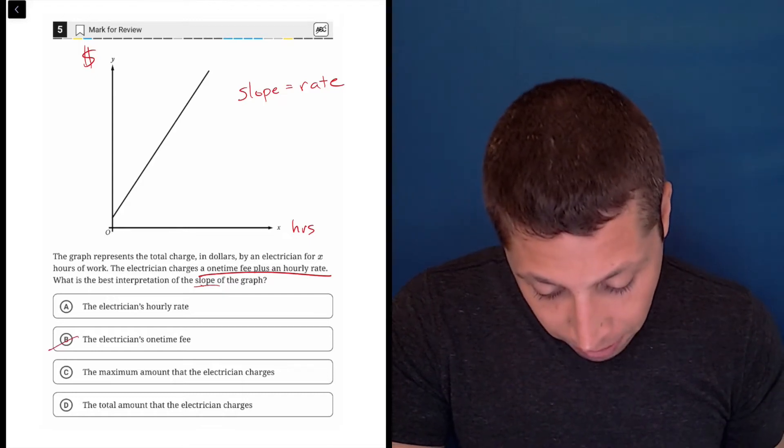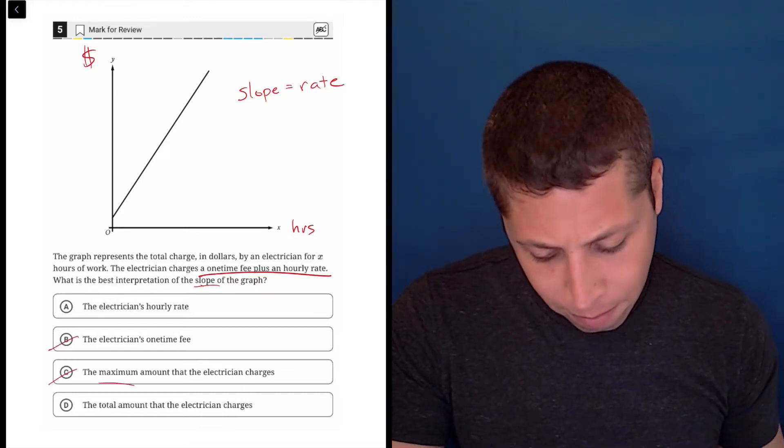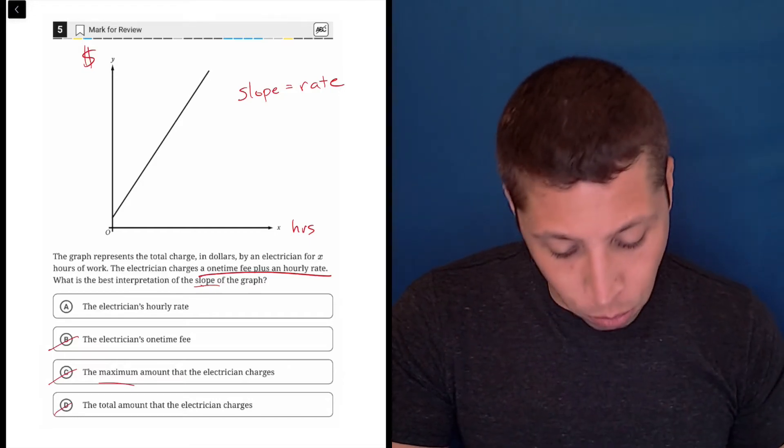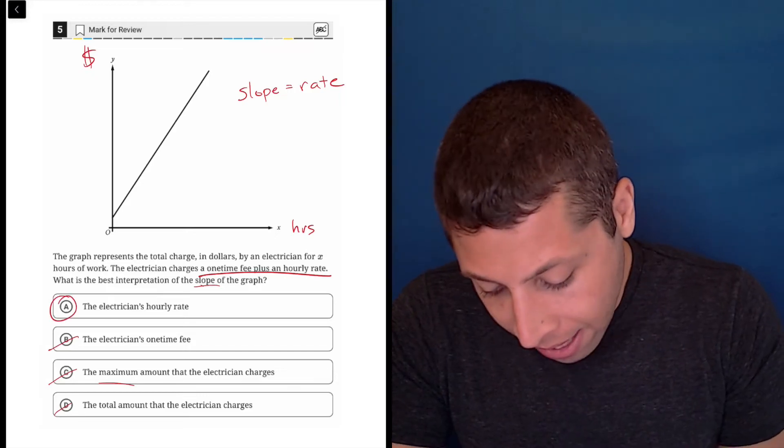Well, B talks about the fee and C talks about a maximum. Lines don't have maximums. The total amount the electrician charges, again, that would be the Y coordinate. So that doesn't make any sense. So A is the answer here.